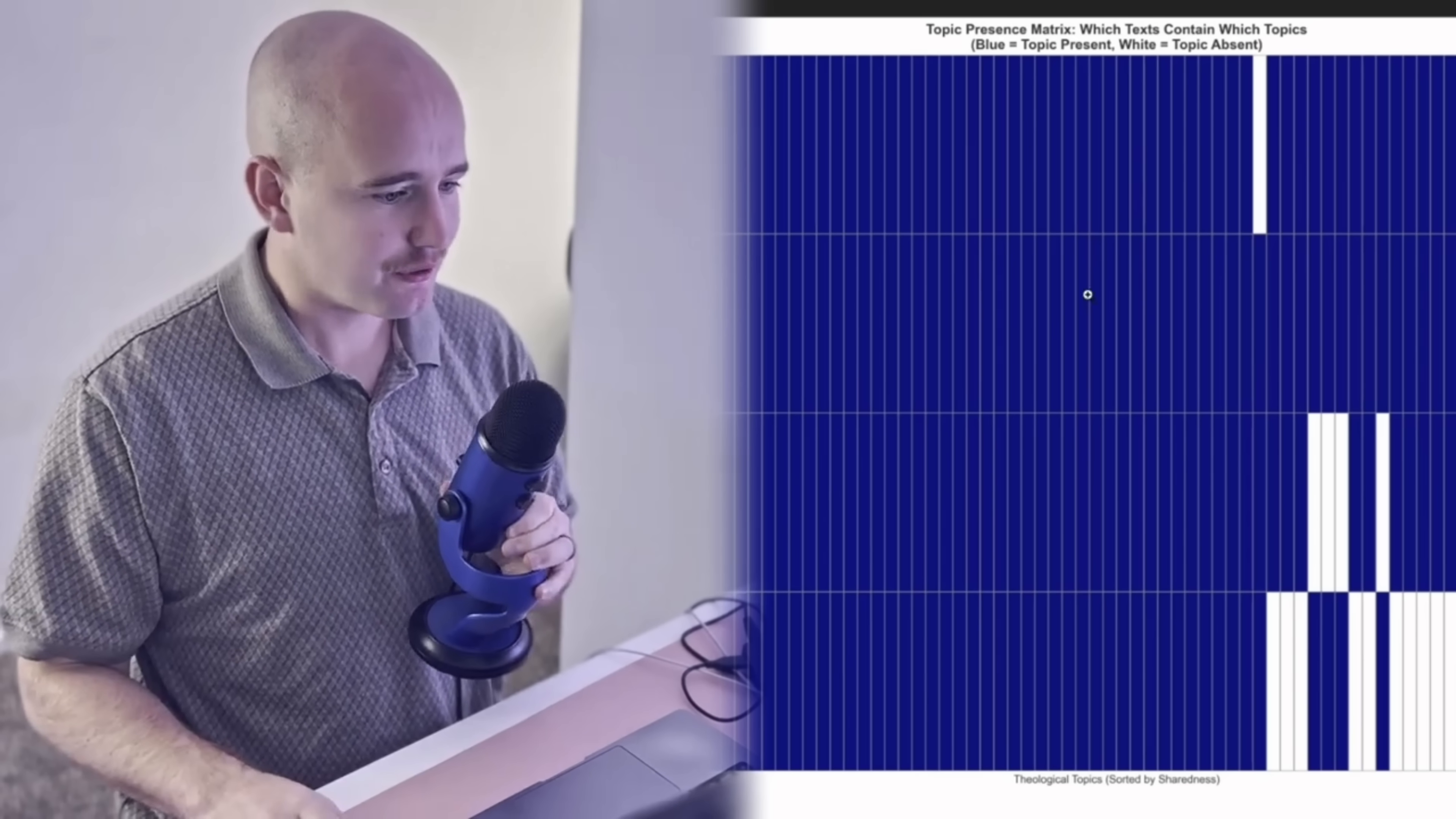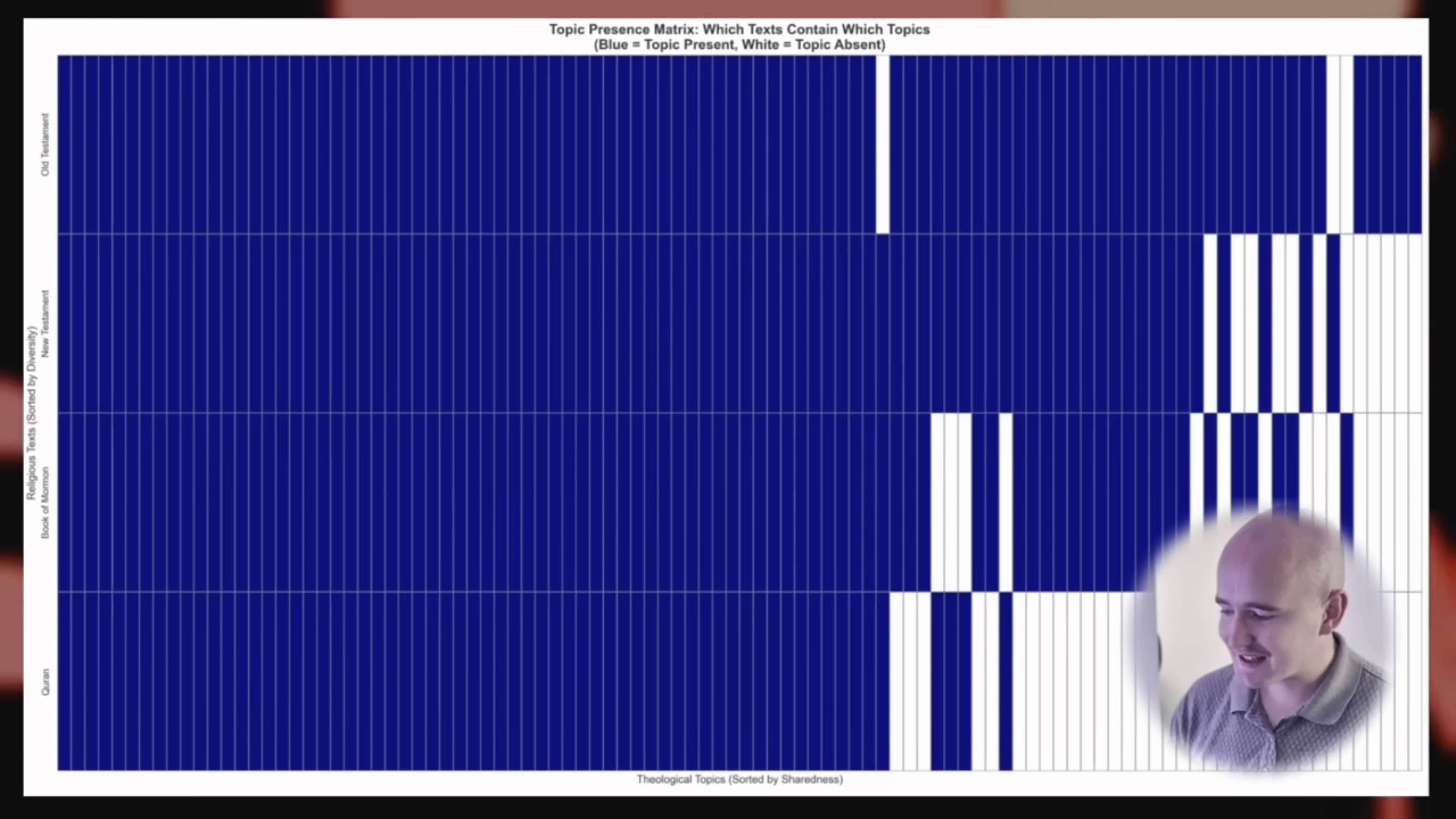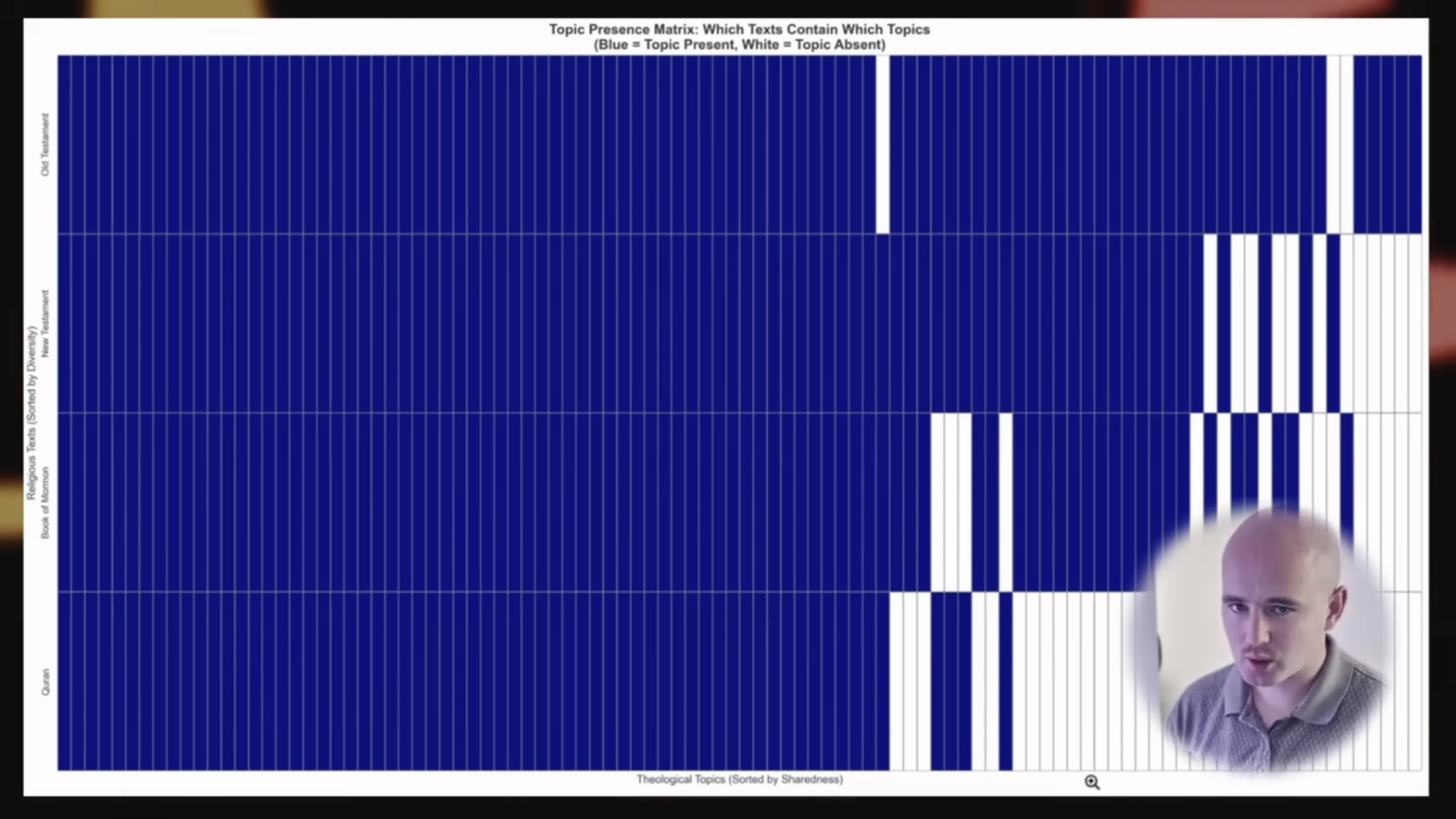And I think the last thing from this analysis that I want to share is this graph right here. This probably doesn't look like anything to you right now, but let me explain. So on the x-axis right here, we have all the different topics that the code was able to pull out. And then on the y-axis here, we have the different books that we're analyzing. And so if the rectangle is blue, that means that that topic was present in that book. And if the topic is white, that means that the topic was not present in this book. And so you'll see in this graph that there is so much blue here. Meaning that for well over two-thirds of all the chapters, the Quran, the Book of Mormon, and the Bible, they all share the same themes. And I think that this is so cool.